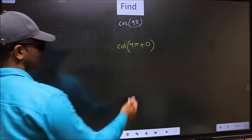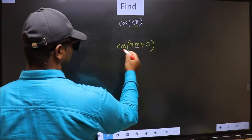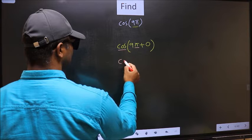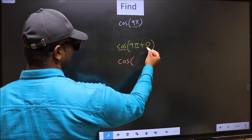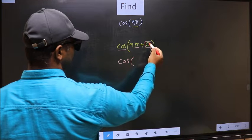Next, here we have π, so cos is not going to change. It will remain cos, and inside we get this angle 0.